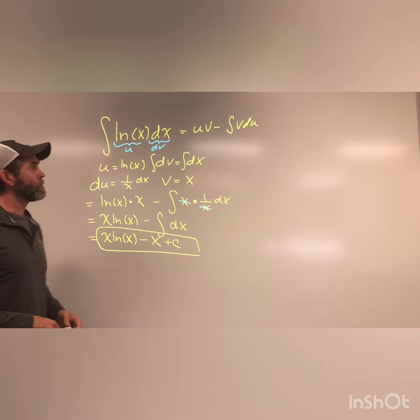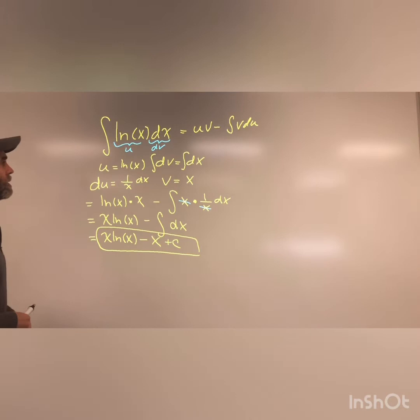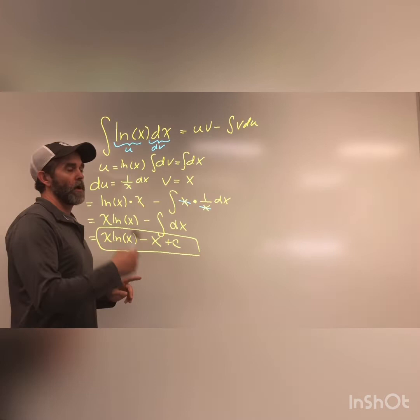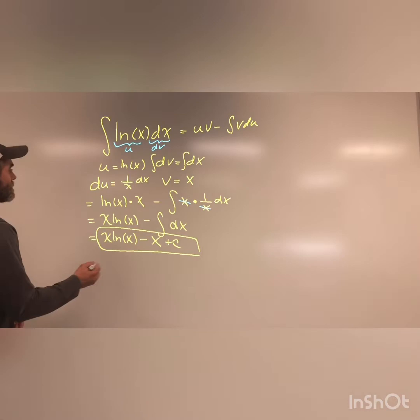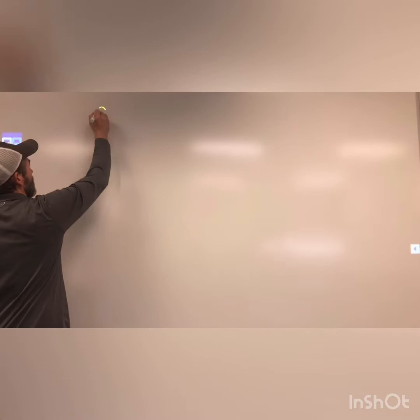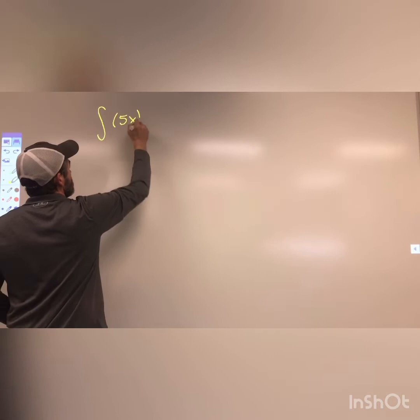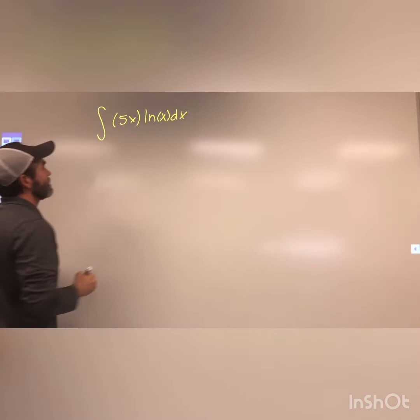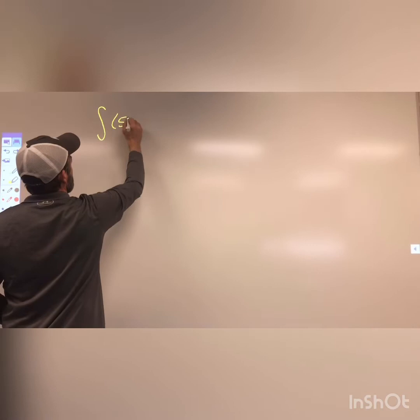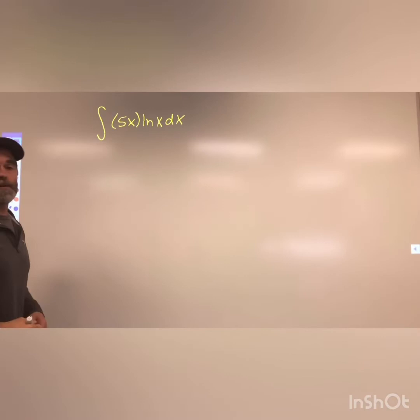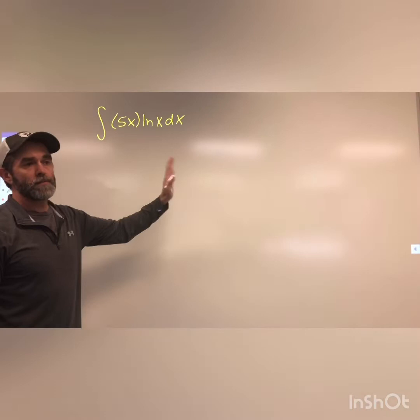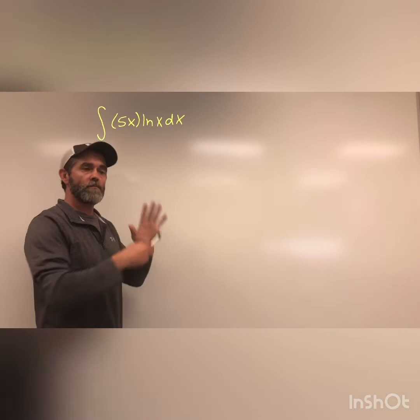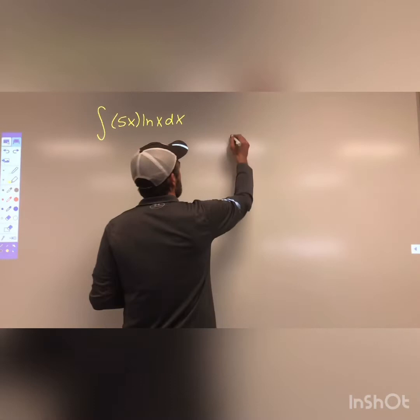What I'm going to do now is bring in a problem that incorporates a natural log and an algebraic expression, to show how we can use the tabular method even when it appears to be failing. Let's look at an example: the anti-derivative of 5x times the natural log of x dx. Now I want you to watch this without writing it down — just see what's happening and how it unfolds.